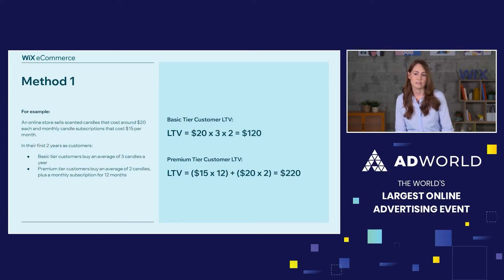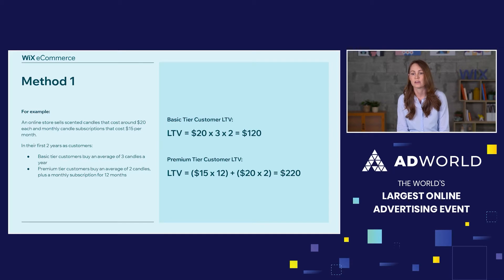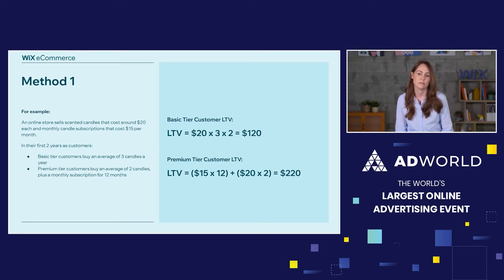Let's put this method to practice with an example. Let's say you're an online store selling scented candles that cost around $20 each and monthly candle subscriptions that cost $15 per month. We're looking at a customer lifespan of two years. In those two years, basic tier customers buy an average of three candles a year, and premium tier customers buy an average of two candles plus a monthly subscription for 12 months.